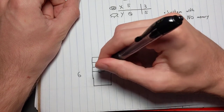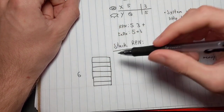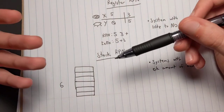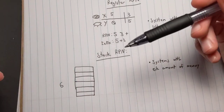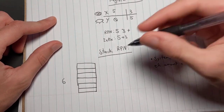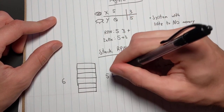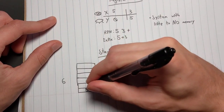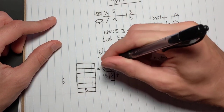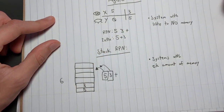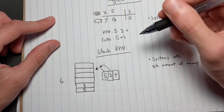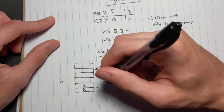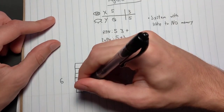Instead of being restricted to two registers, stack RPN uses a stack — sometimes unrestricted in size. Let's say we have a stack with six slots. To add 5 and 3 using '5, 3, plus': we throw 5 into the bottom of our stack, then throw 3 above it. When we come across the addition operator, it takes the two topmost items — 3 and 5 — removes them, adds them together, and puts the result of 8 back at the bottom of the stack.